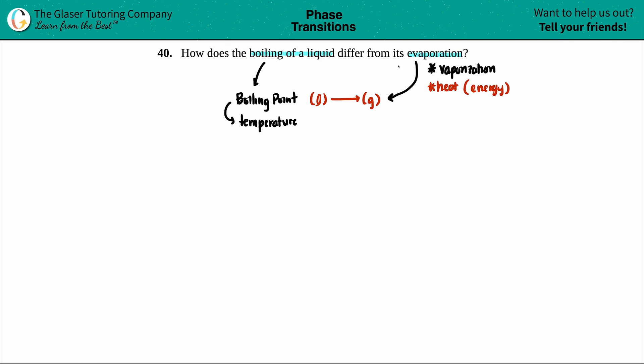So for a boiling point, a boiling point can only occur if the vapor pressure—and vapor is just the fancy way of saying a gas—if the vapor pressure above the gas...